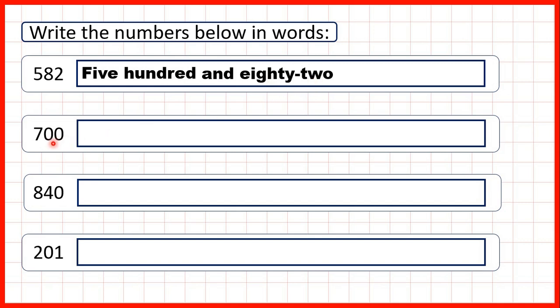For this number here, we have seven as our hundreds digit, so we can write seven hundred. But then, after our hundreds digit, our tens and ones digits are both zeros. That means we don't have any tens or ones in this number, so we don't need to write anything else. Our number is just seven hundred.